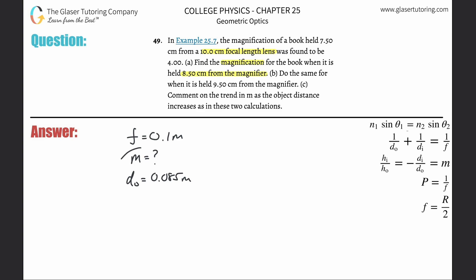In order to find magnification, I already know that I have the object distance. So I'm going to be using this equation on the right hand side. It says that negative DI, the image distance divided by the object distance, is going to be equal to the magnification. I already know DO. I got to find DI.